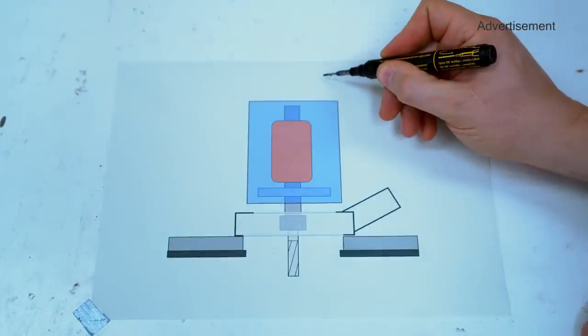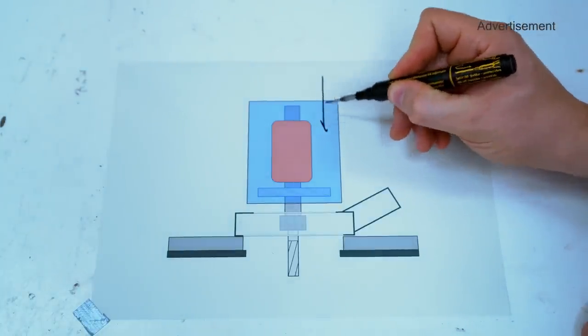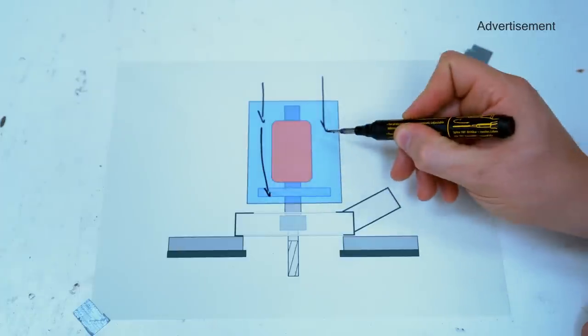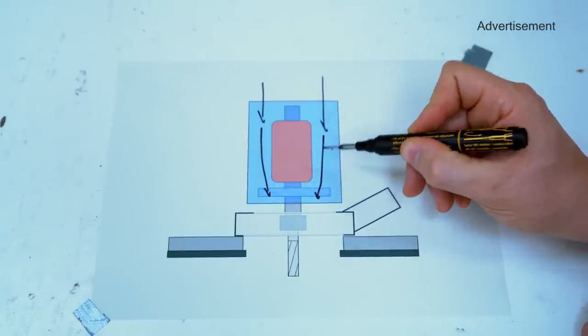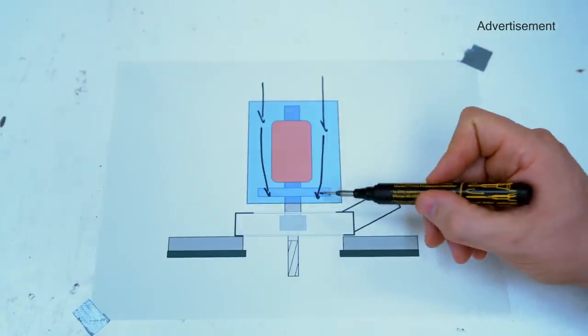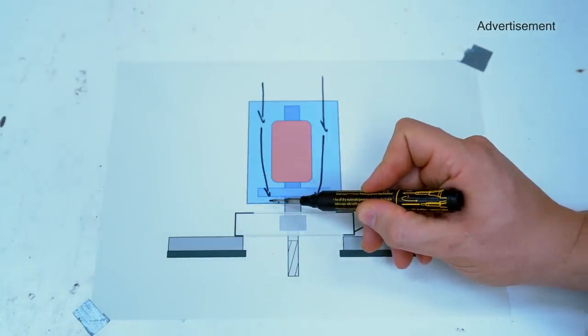When the router is running the motor sucks in cool air from above, heats it up and blows it out the bottom which is how excess heat is disposed of. The problem is that the air gets blown directly into the dust collection shroud and is promptly sucked up by the shop vac.